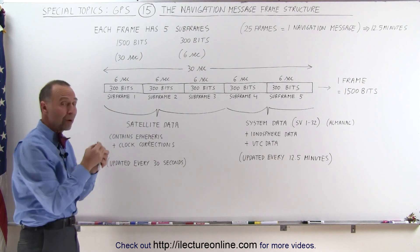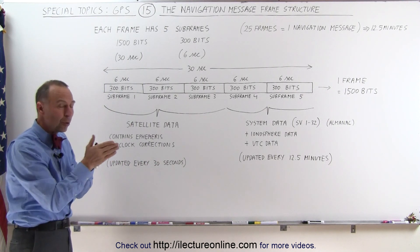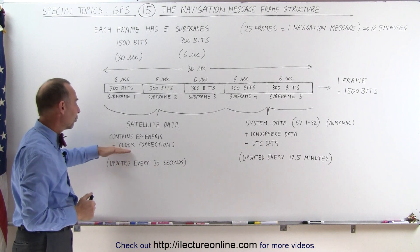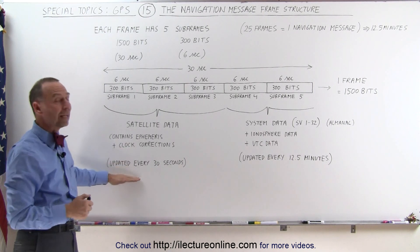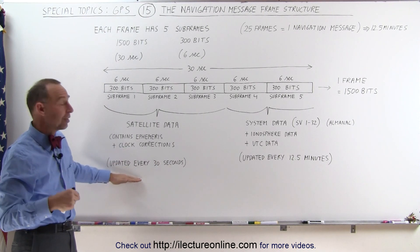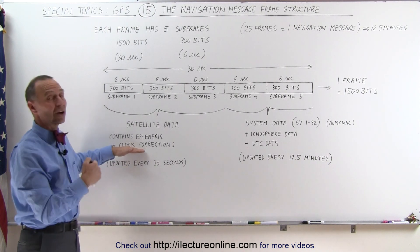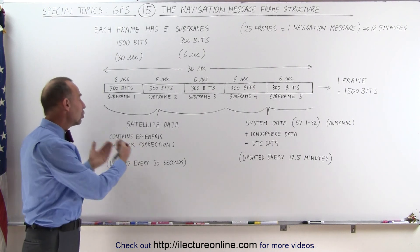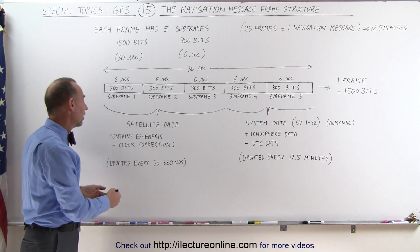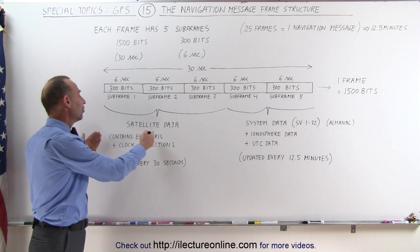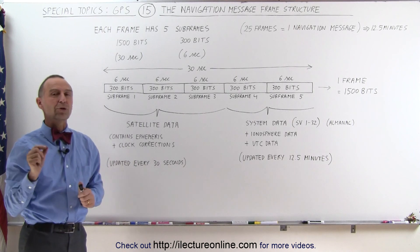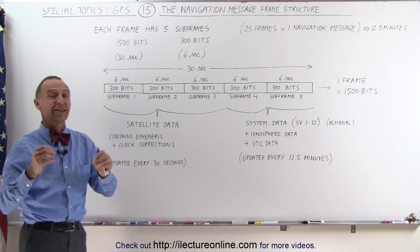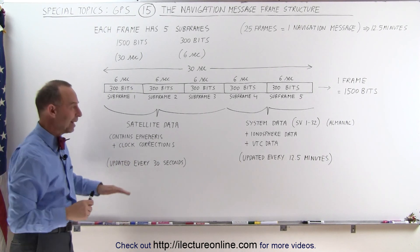It is the clock corrections that allow the receiver to know exactly where the receiver is at, and that's why they need to be updated every 30 seconds. After about 30 seconds, the clock corrections become outdated, and we need new clock corrections and new ephemeris data of the satellite so that we know the exact position of the satellite — as exact as we can get it.